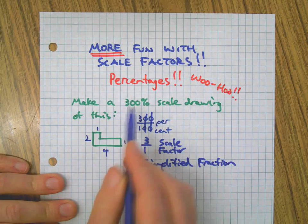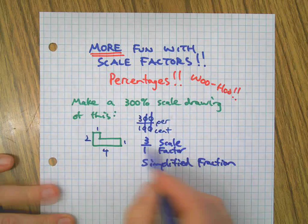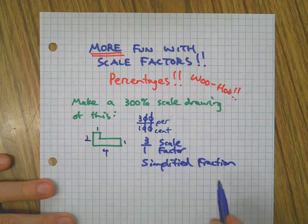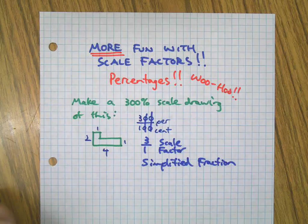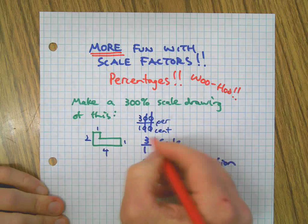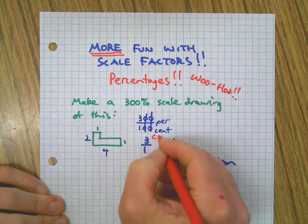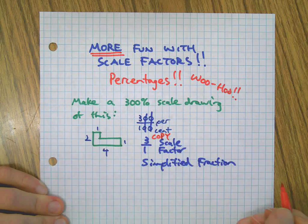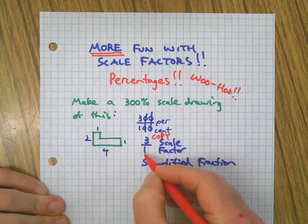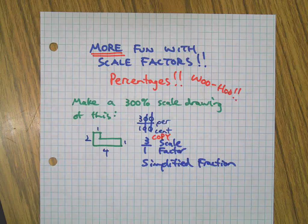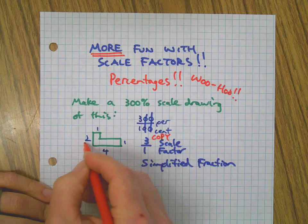So now instead of thinking of 300%, I have a scale factor of 3 over 1. And hopefully you remember from before, the copy is on the top so you can tell the copy is going to be three times bigger than the original here.